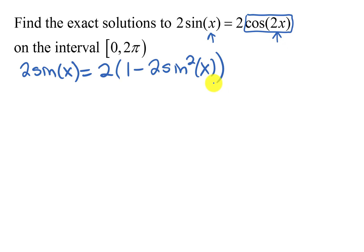So now I have an equation that just involves sine x. I'm going to get rid of the parentheses by distributing the 2 through. And so that's going to give me 2 sine x equals 2 minus 4 sine squared x.